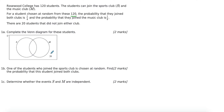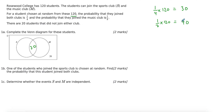For Venn diagrams, always start with the intersection — the ones that joined both clubs. The probability is a quarter, so always go to the total amount. A quarter of 120 gives you 30, so there are 30 students that joined both. The probability they joined music is a third, so a third of 120 gives us 40. But from that 40, I've already included 30 in the intersection, which means I'm left with 10 in music only.